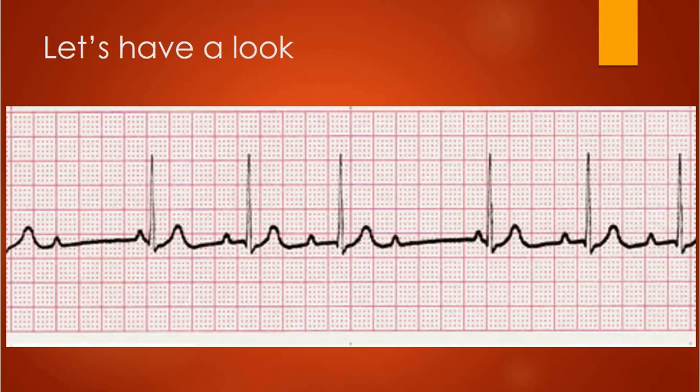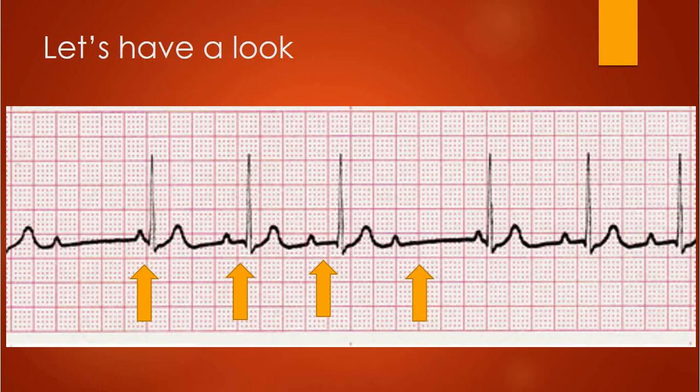So let's have a look at one. When we analyze the PR interval, as you can see here, it elongates, it elongates, and then it drops a complex. We have a P wave with no QRS complex following right behind it — classic Wenckebach block right here.